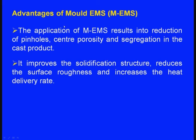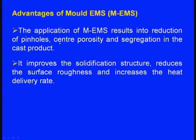The application of M-EMS results in reduction of pin holes, center porosity, and segregation in the cast product. It also improves the solidification structure, reduces surface roughness, and increases the heat delivery rate. These are the advantages of mold electromagnetic stirring.